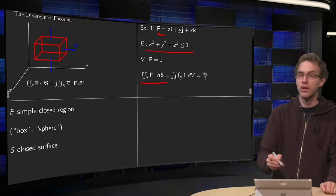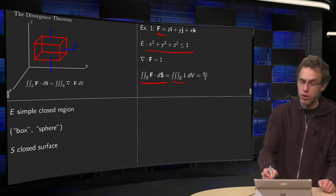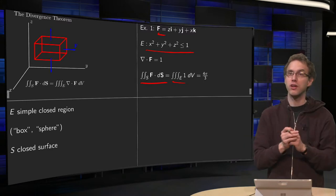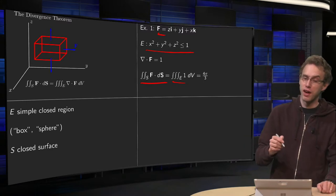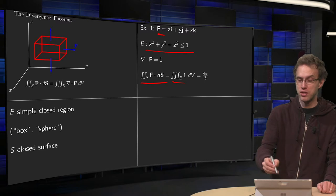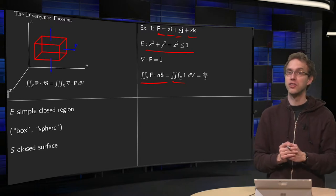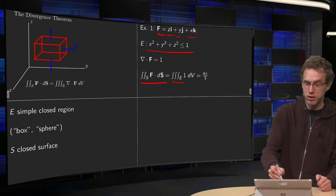This flux integral equals the triple integral over the full unit sphere of the divergence of F. But the divergence of F is the ddx of z equals zero plus the ddy of y equals one plus the ddz of x equals zero. So the divergence of F is just equal to one.